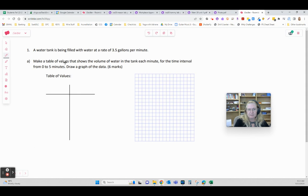So we're asked to make a table of values based on this water tank that's gaining water at three and a half gallons per minute. The table of values is going to have these minutes in there and then volume since that's what gallons are. So we're going to have time and volume.